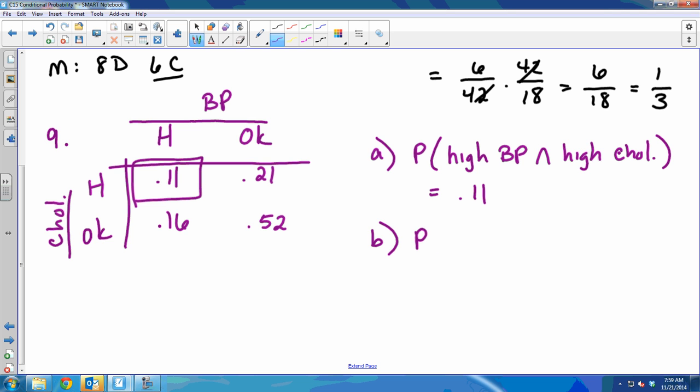In part B, it asks the probability that a man has high blood pressure. This is where this gets confusing because the table doesn't give you any totals and you have to think through it. High blood pressure is everything in this column, right? It's not just 0.11. It's everything in that column. So you would add those together. If they were nice and gave you the totals ahead of time, you wouldn't be as confused probably. You do 0.11 plus 0.16. It's just all those people in that column. The probability of high blood pressure would be high blood pressure with high cholesterol or high blood pressure with okay cholesterol, right? It's just high blood pressure is the only thing we're looking at. That's 0.16 and you get 0.27.